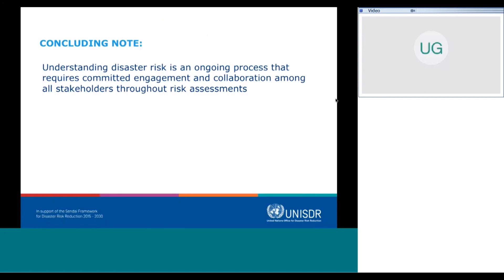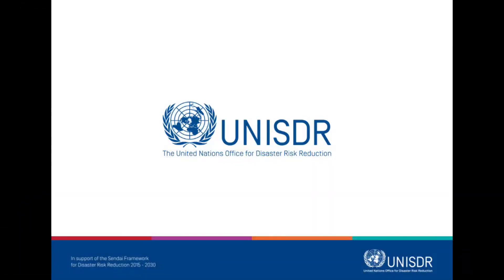The concluding note is that understanding disaster risk is an ongoing process. We have observed in good country cases that have been doing national risk assessments and have managed to get the information used by various sectors, that it has been a decade-long process. Many of these countries started 10 to 13 years ago with small initiatives and gradually improved their systems, mechanisms, and processes — enhancing coverage, adding hazards, engaging with more stakeholders, and gradually together improving their understanding of risk. It requires long-term commitment and engagement, collaboration among all stakeholders — both technical experts and policy makers, decision makers, and the general public — throughout the process of risk assessment. Thank you.